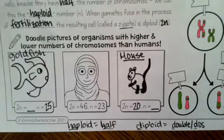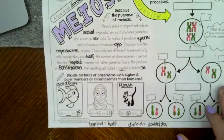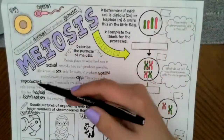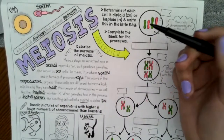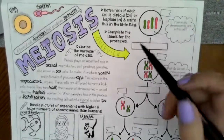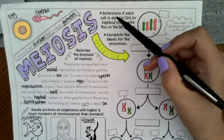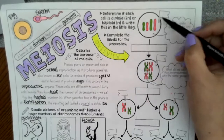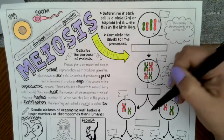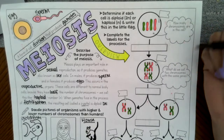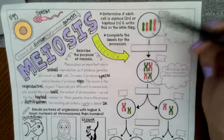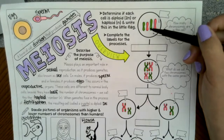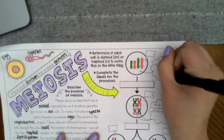Now we've filled out the whole left half, and we're going to start on the right half. This is going to give us an overview of what meiosis looks like. We need to determine if each cell is diploid (2n) or haploid (1n) by writing it in the little flag. We're going to track which stages of meiosis are haploid and which are diploid. First, how many chromosomes are in the starting cell? I count one, two, three, four — so four chromosomes.